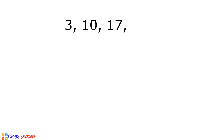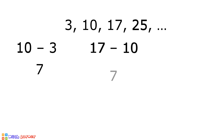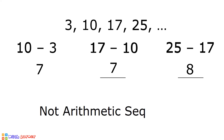Let's have another example. We have 3, 10, 17, 25, and so on. Let us check if there is a common difference. 10 minus 3 is equal to 7. 17 minus 10 is equal to 7. And 25 minus 17 is equal to 8. There is no common difference because 7 is not equal to 8. Therefore, this sequence is not an arithmetic sequence.